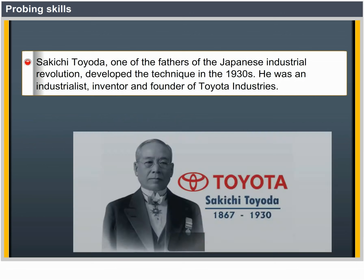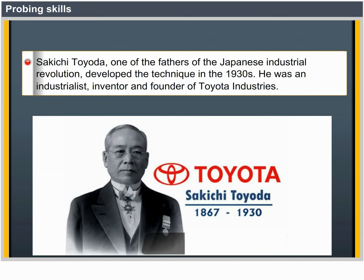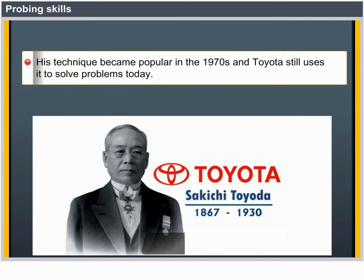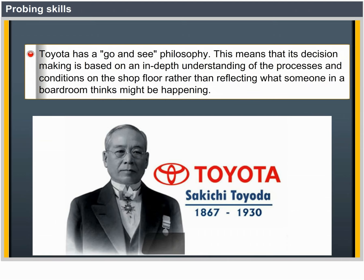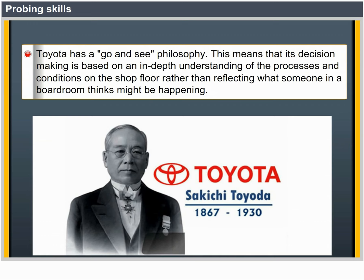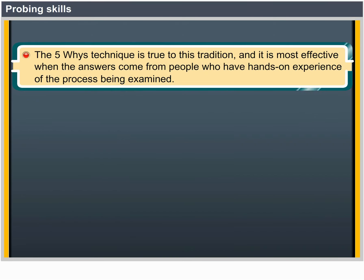Sakichi Toyoda, one of the fathers of the Japanese Industrial Revolution, developed the Five Whys technique in the 1930s. He was an industrialist, inventor and founder of Toyota Industries. His technique became popular in the 1970s and Toyota still uses it to solve problems today. Toyota has a 'go and see' philosophy — its decision making is based upon an in-depth understanding of processes and conditions on the shop floor rather than reflecting what someone in a boardroom thinks might be happening.